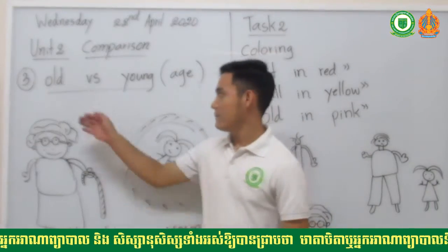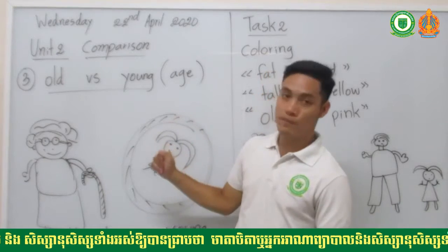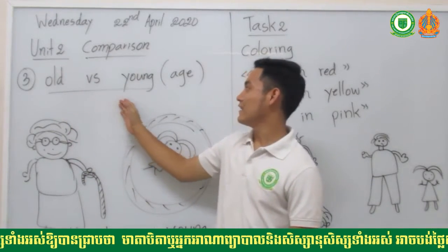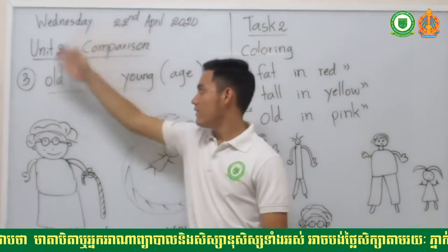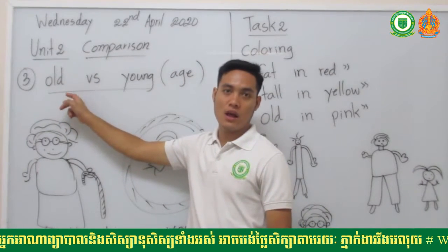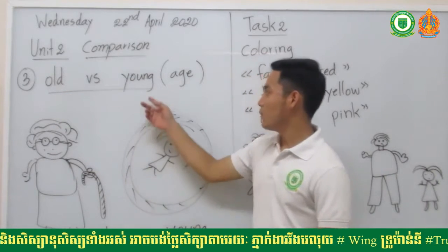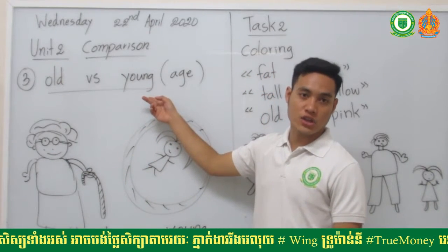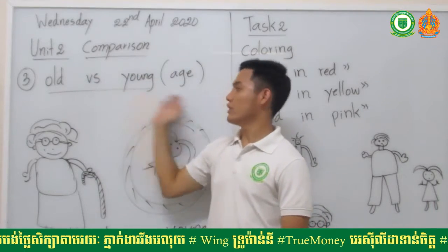Now we go to the third part of your lesson — number three. You will learn how to compare using the words old and young. Read together: old, old, old — and this one: young, young.